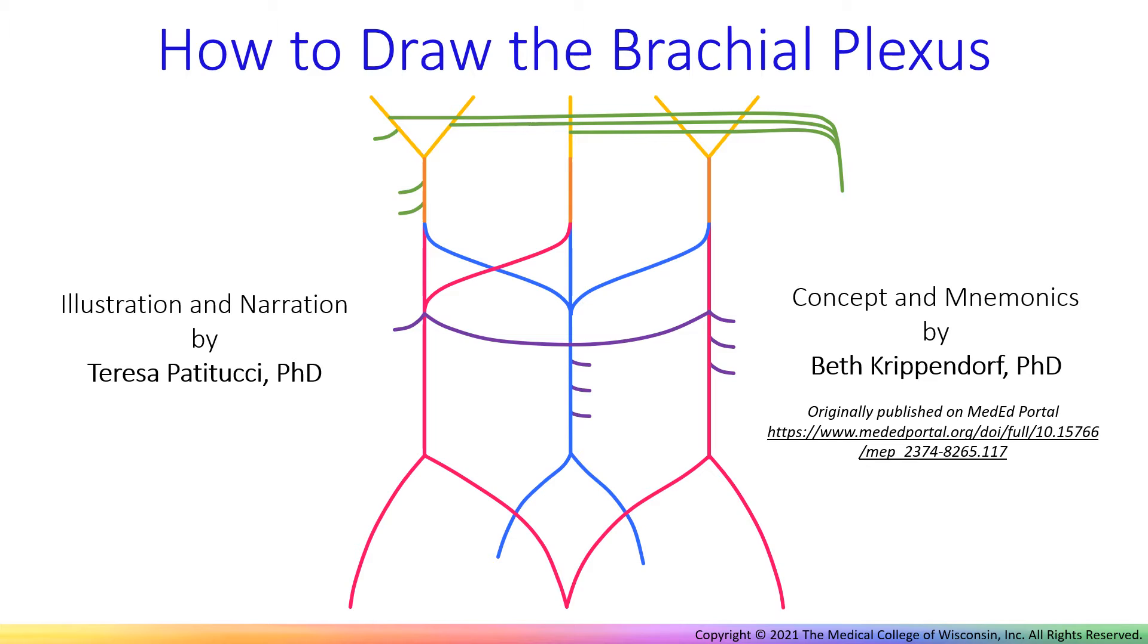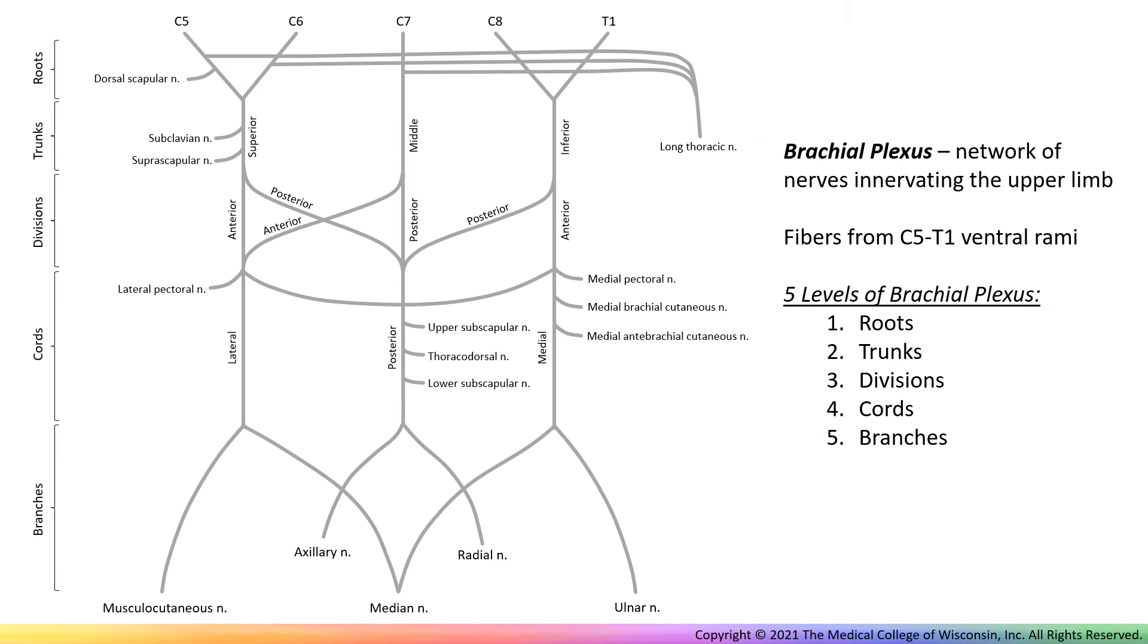In this video, we will teach you how to draw a quick schematic of the brachial plexus. The brachial plexus is a complex network of nerves innervating the shoulder and upper limb, originating from ventral rami of spinal nerves C5 to T1 and giving rise to five levels.